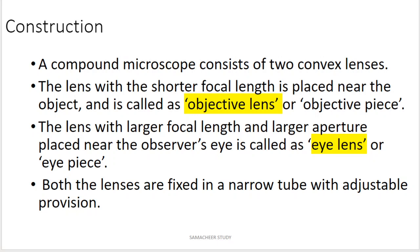This is the objective lens, which is placed near the object. The inner lens has a larger focal length. These are the important points: the objective lens has a shorter focal length, and the eye lens has a larger focal length. This is the diagram — you can see it very easily. Both lenses are fixed in a narrow tube with adjustable provisions.